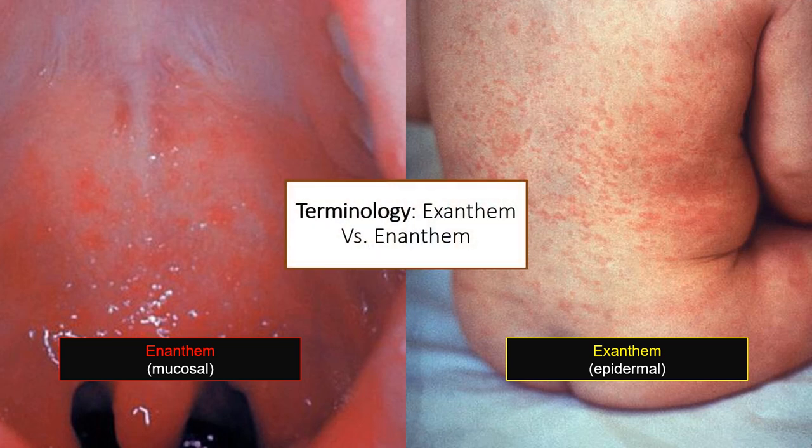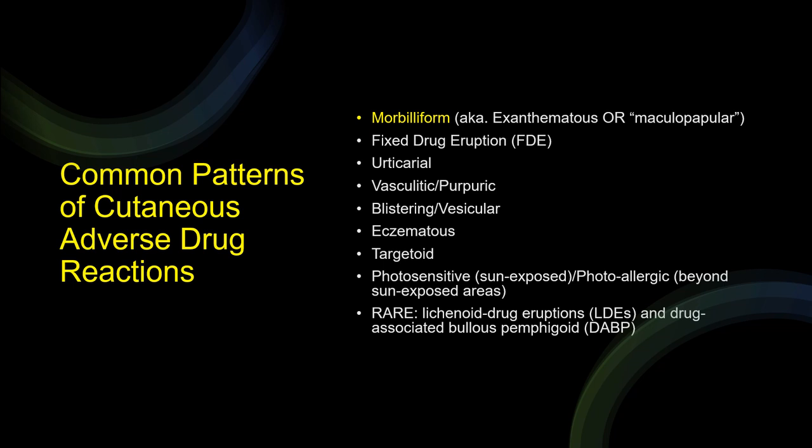An exanthem is a rash involving the keratinized epidermis, whereas an enanthem refers to a mucosal rash. When describing the lesion type or character, drug-induced eruptions tend to cause a few specific skin lesions much more commonly than others, so we only need to identify a select group. Others may be appropriate reasons for dermatology assessment.